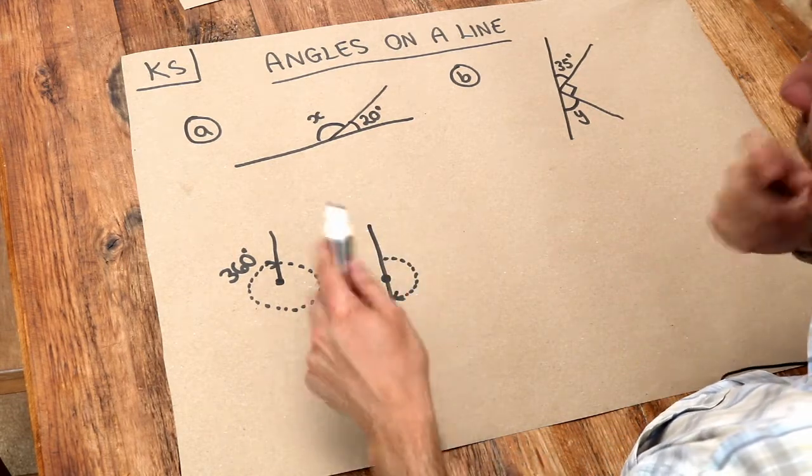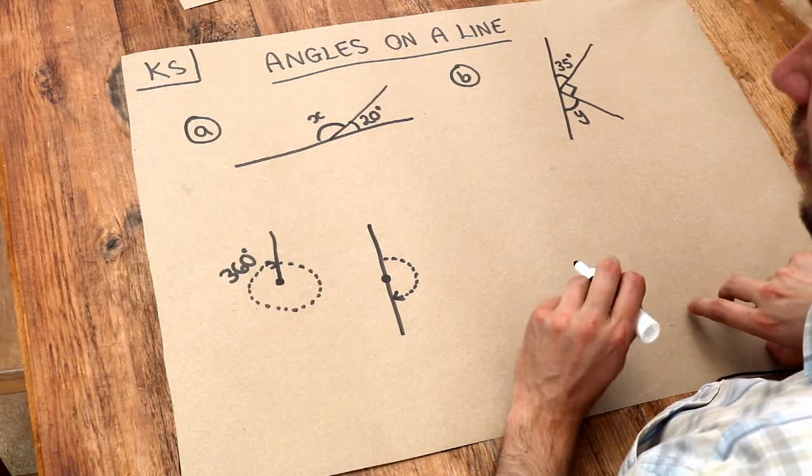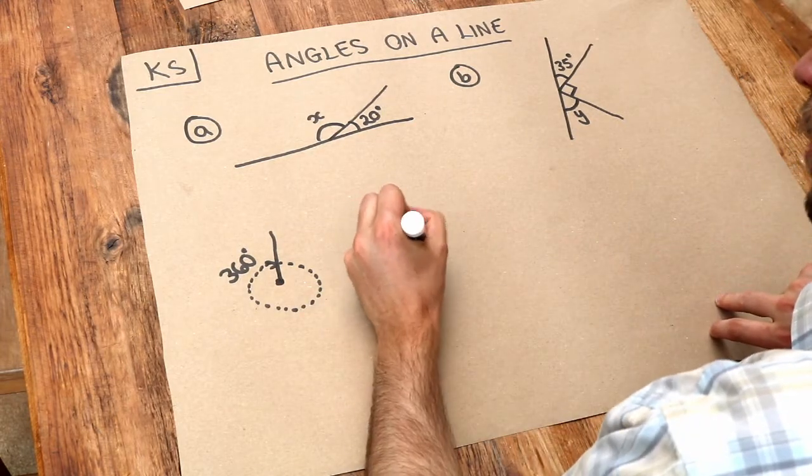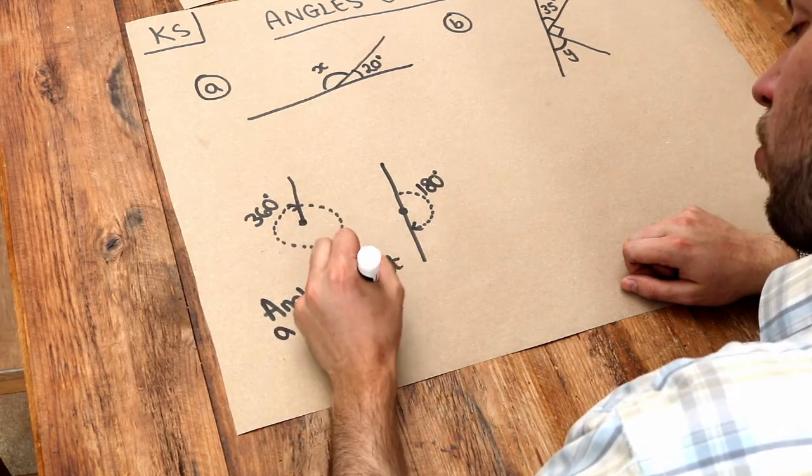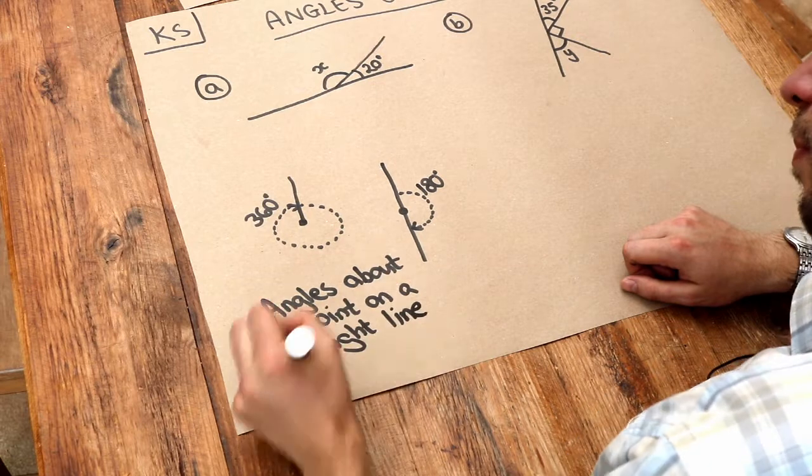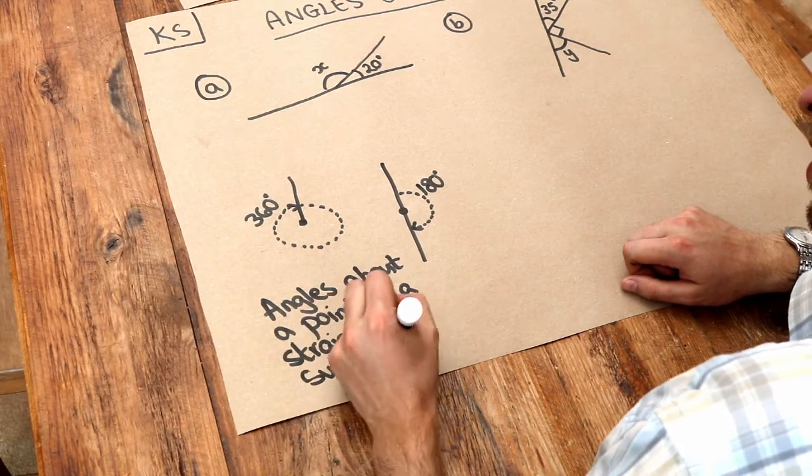So therefore that angle there must be half of 360 degrees which is 180 degrees. So therefore the angles about a point on a straight line sum to 180 degrees.